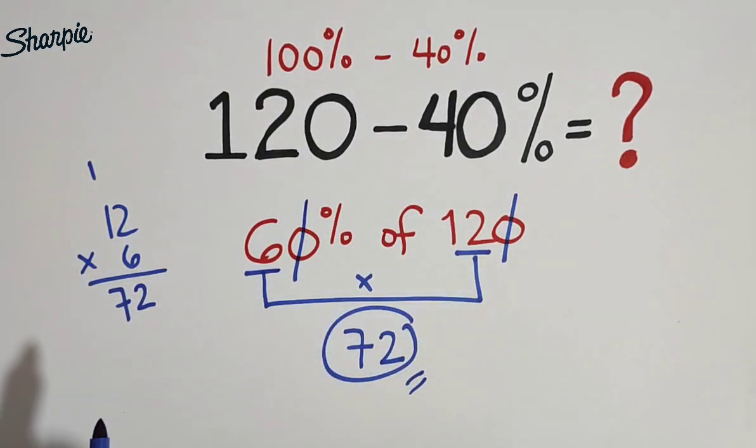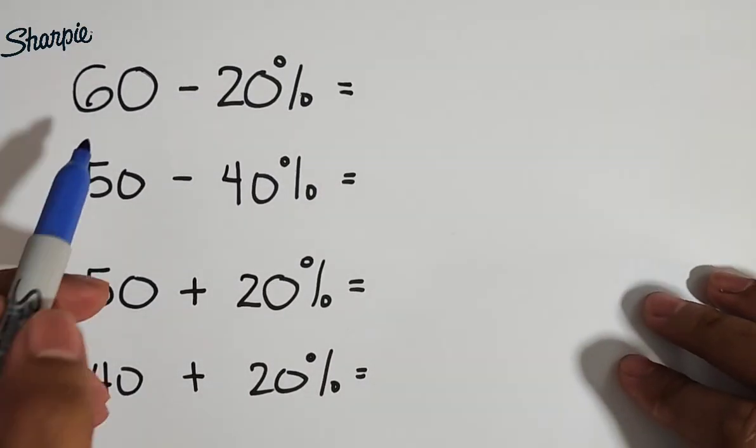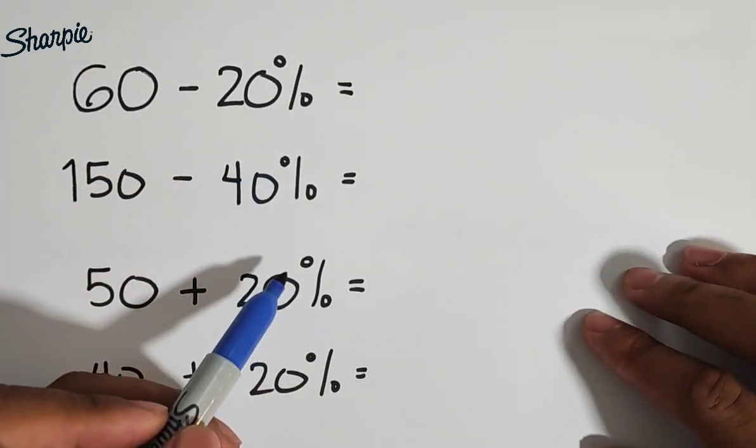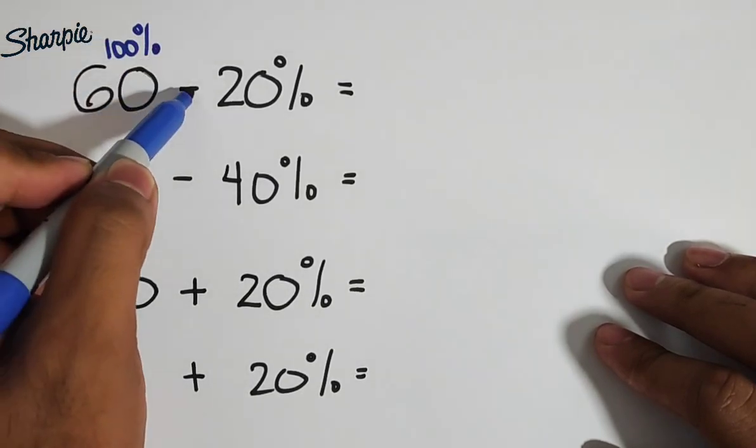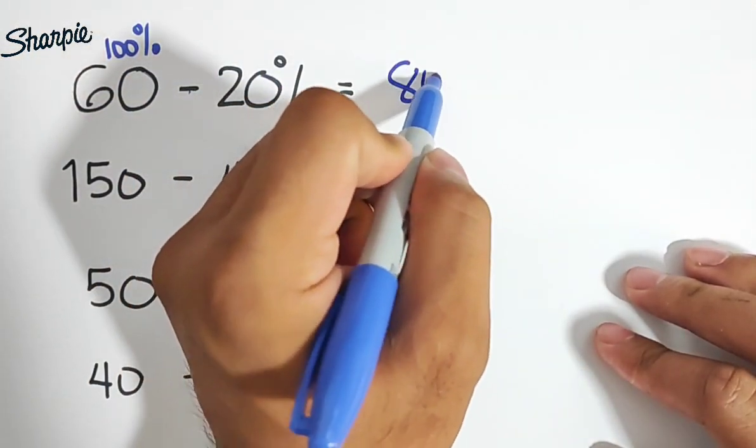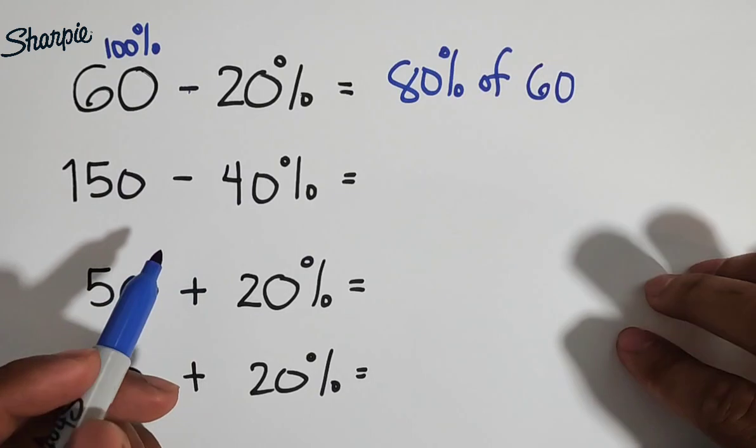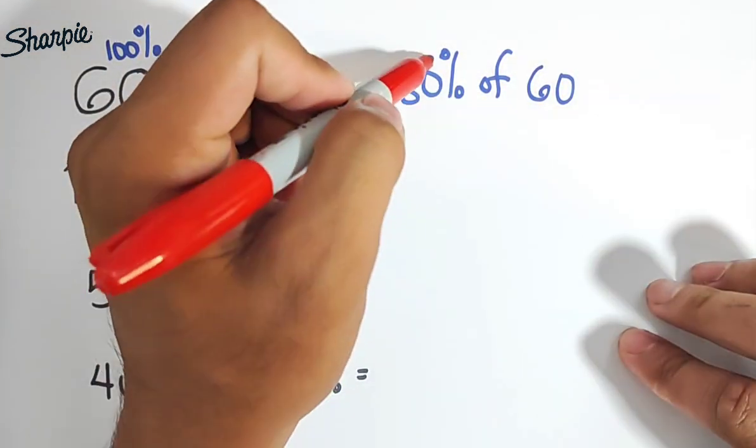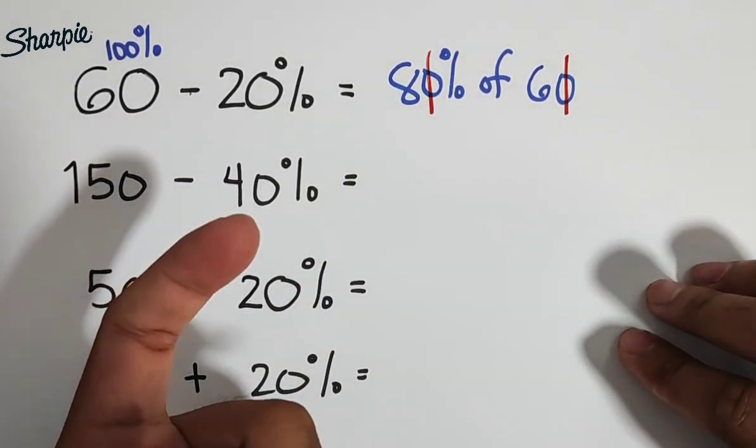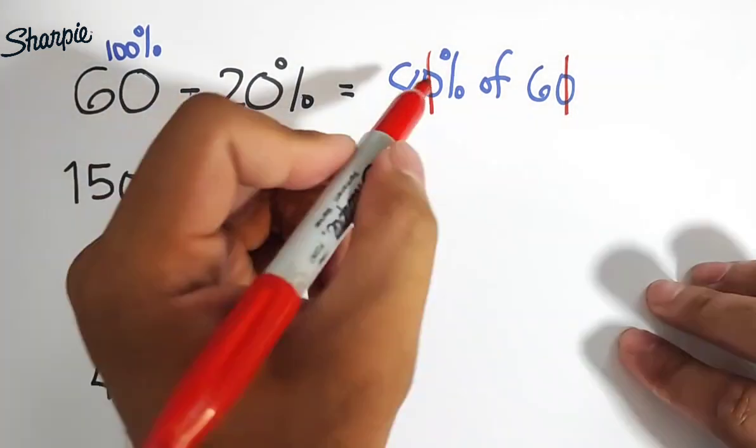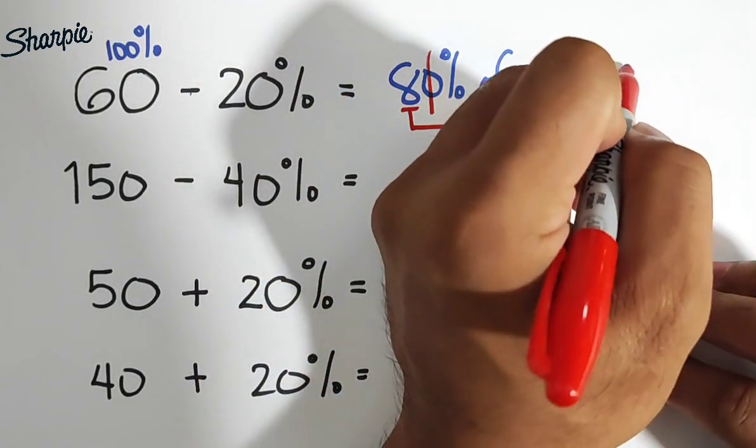So let's try this kind of trick using different problems. So let's have this one. We have here 60 minus 20%. So we can translate this one using our trick. This is 100% minus 20%. So it will become 80% of 60. So what we need to do here is to eliminate your zero, your zero. Again, this is only applicable for those percentages divisible by 10. So we have to multiply 8 and 6. So we have 8 times 6, which is equal to 48.